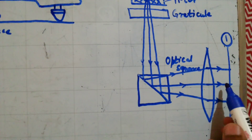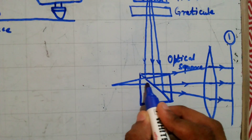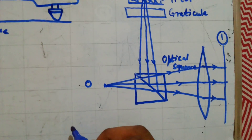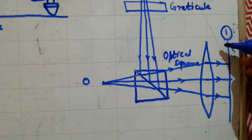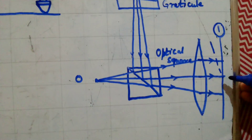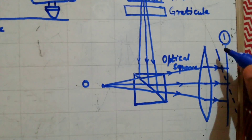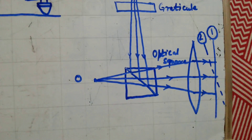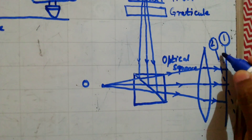This is the position of the reflector if it is perpendicular to the optical axis. If it is perpendicular to the optical axis, then the ray meets at the point O. If the reflector is tilted — for example, there is a tilt — this is position 2, where the reflector is tilted by an angle theta.